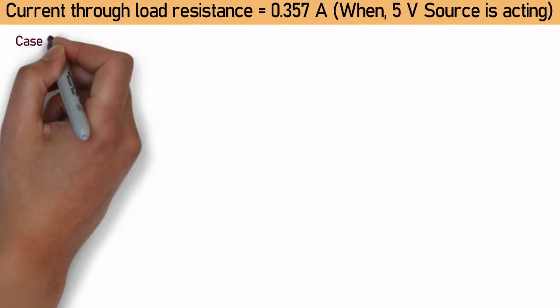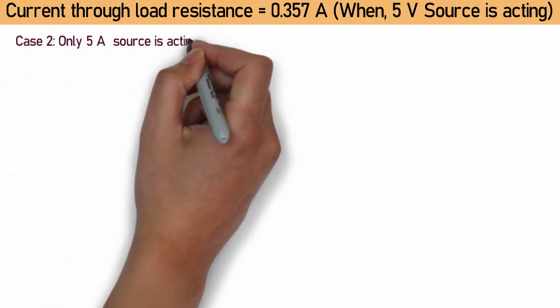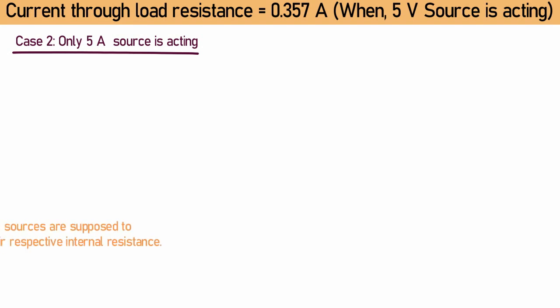In the second case, we are considering 5A current source. So, sources other than 5A are replaced by their respective internal resistance.